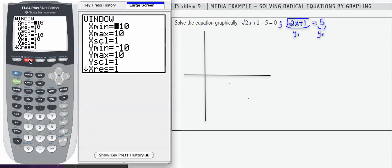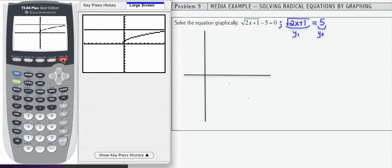So I'm going to graph and just be sure that I see the intersection in the window, and if I don't, then I can make adjustments. So I'm going to hit graph. This equation here is the square root of 2x plus 1. This one here is 5, y equals 5. So I don't see the intersection in my window, but it's going to appear further off to the right.